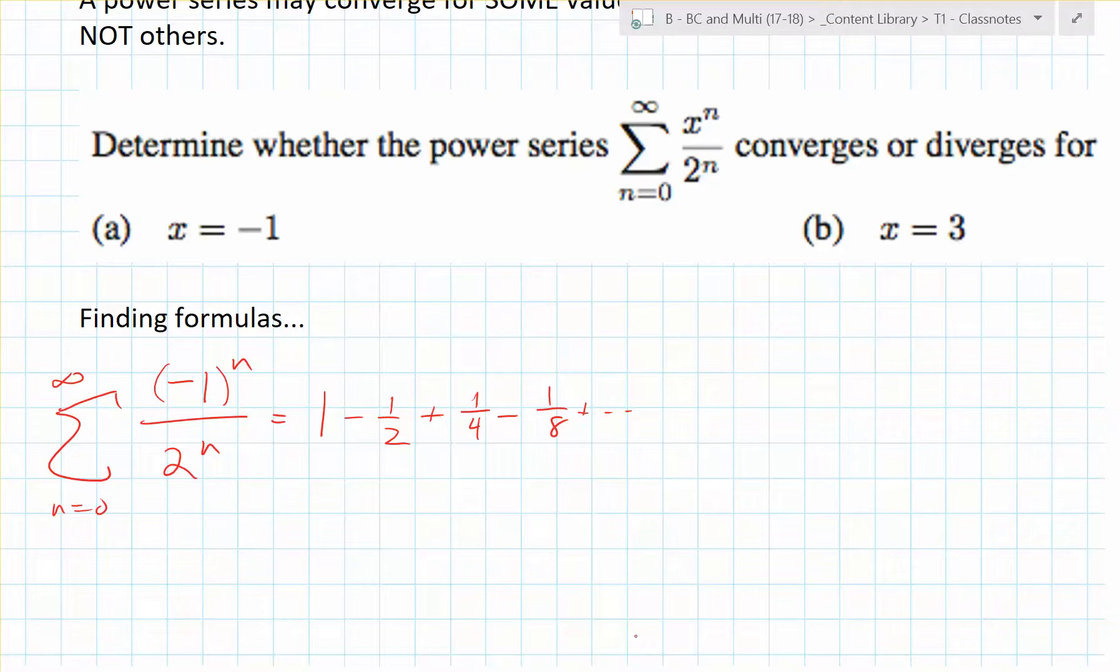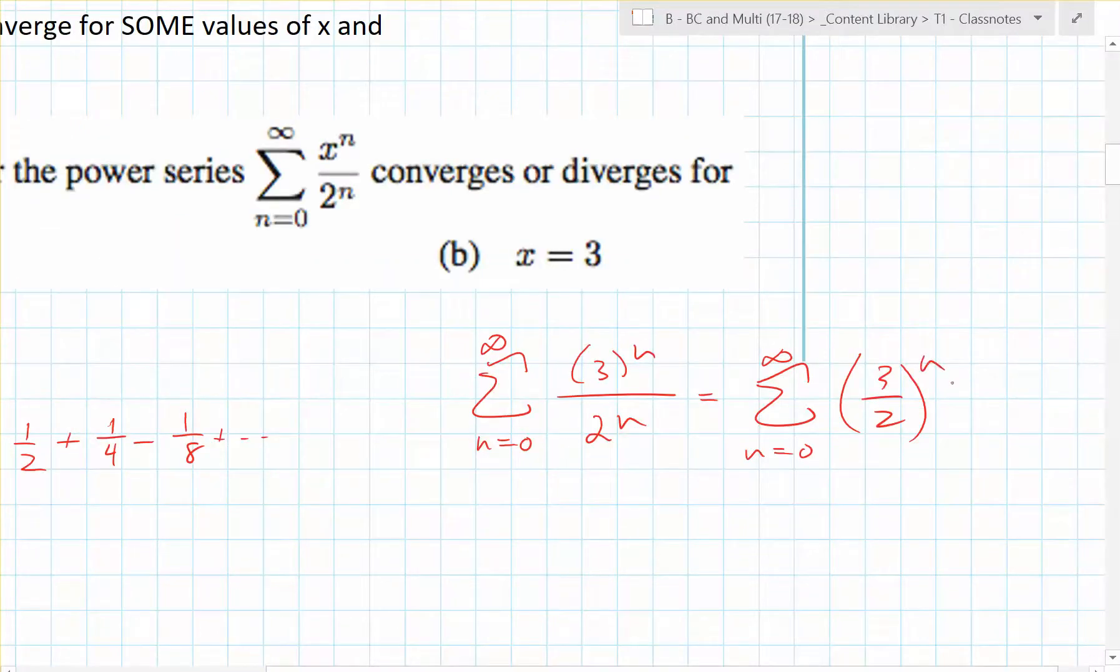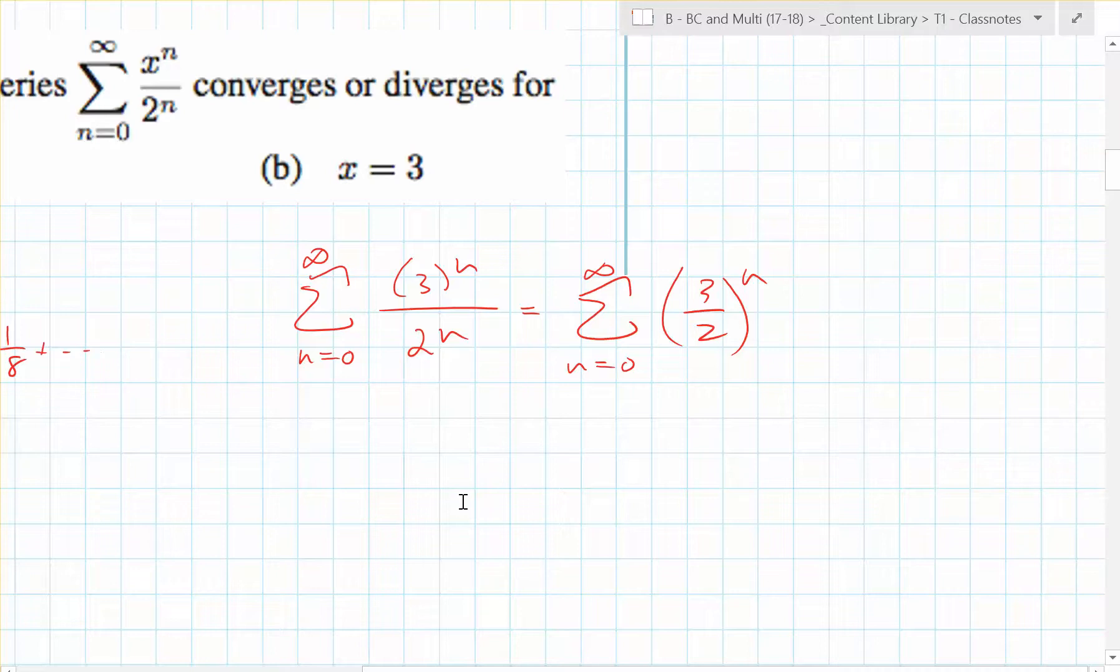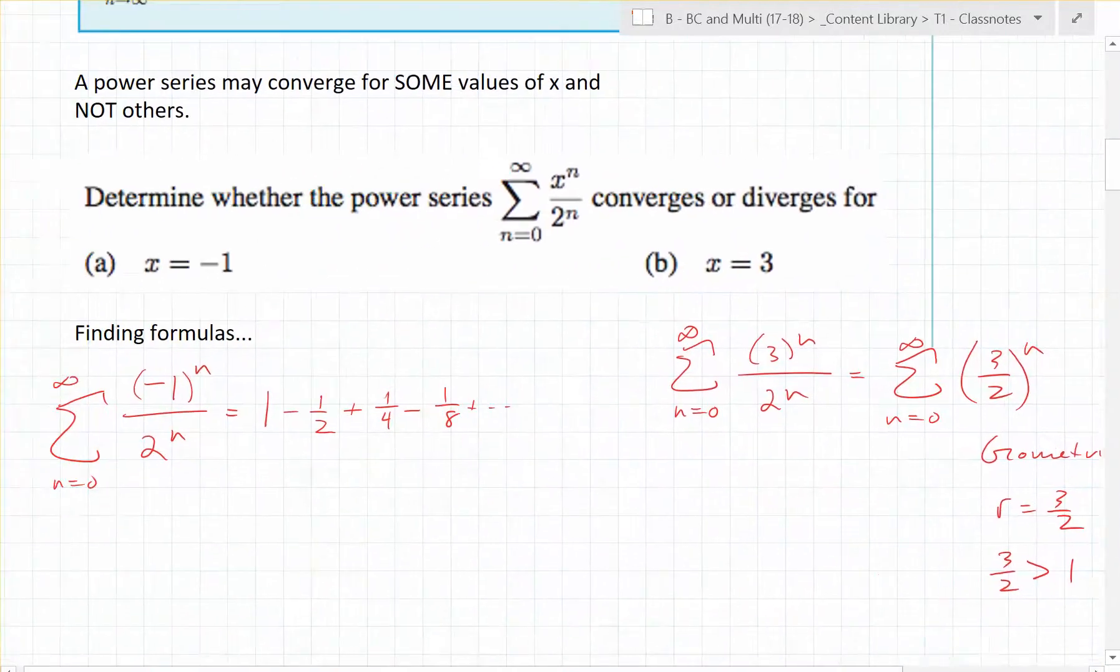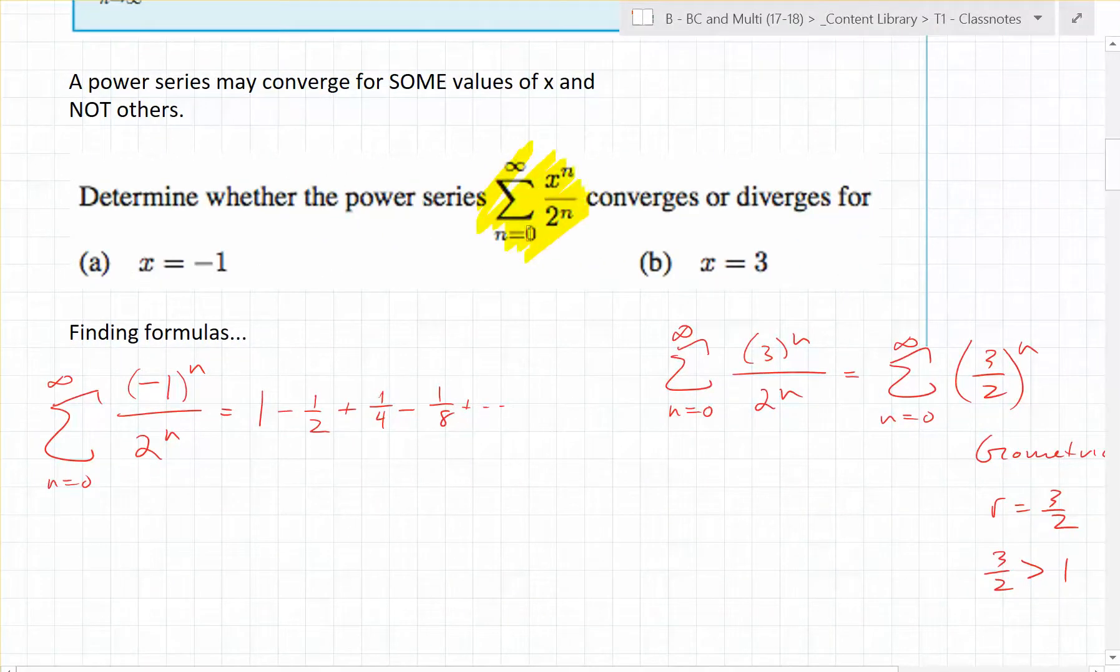Let's write out the next one. We've plugged in x equals 3 to the n power. What type of series is that? It's geometric, right? And what's the r value? 3 over 2. So does this converge? It does diverge.